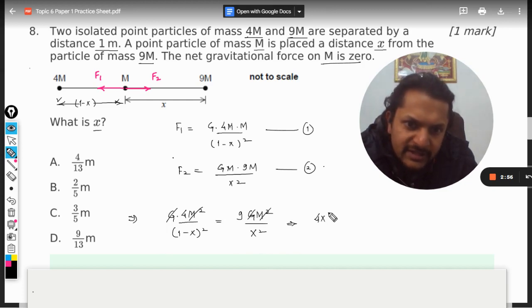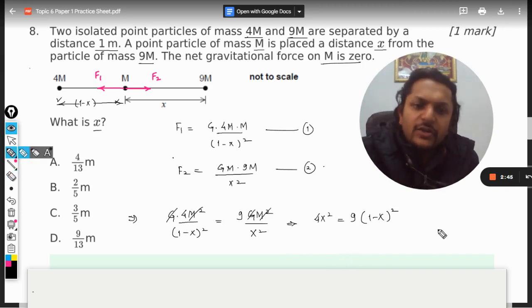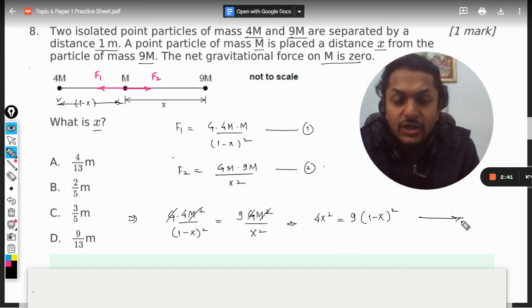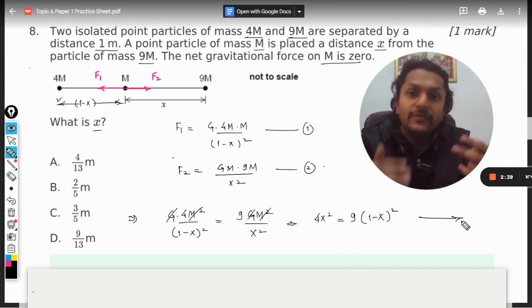Now we need to equate these two forces. m squared and G gets cancelled out and now we just cross multiply it. There's no other option, we have to solve it. Actually there is an option - instead of creating a quadratic equation here, you can create a quadratic equation and then solve it. You would be having two answers, two values for x. One value will be neglected, another value will be chosen as the correct answer.